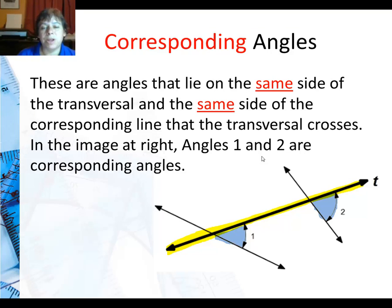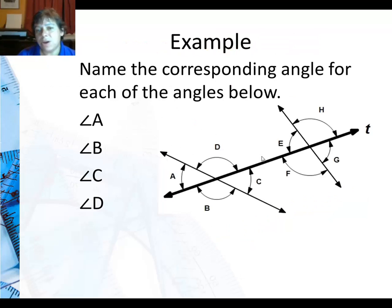So here, I'm going to go ahead and do angle A and angle B. So angle A is above the transversal and to the left of the line. You see it right there. So I need to go above the transversal over here, so it's either angle E or angle H, but I need to be to the left of the line. So it's angle E.